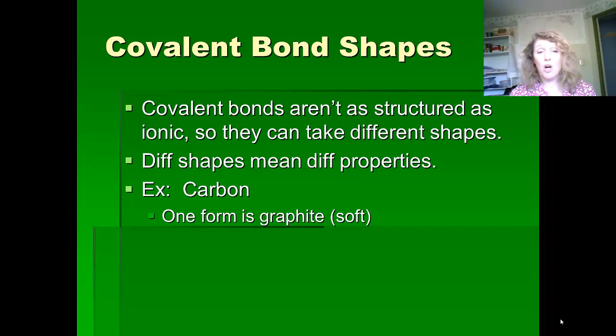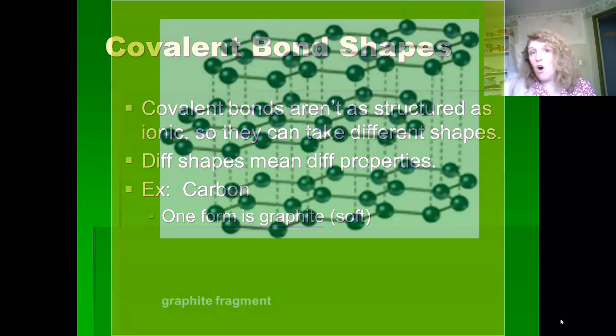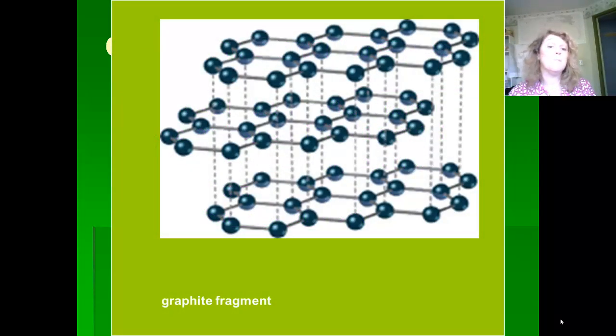One form of carbon is graphite, and that's the pencil lead graphite. Now this is really soft. You can squish it around and layers of it come off on your paper. Now this is because when the carbon bonds together for graphite, it bonds in a specific way that gives it layers.